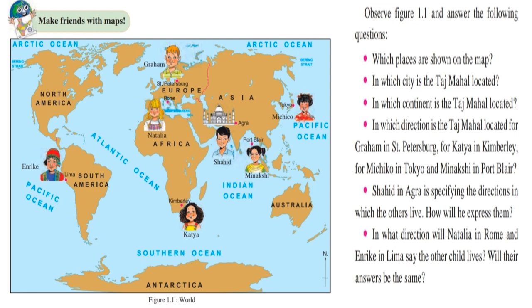From this, we understand that the direction of a place is not same for all children. The direction of a place varies from person to person. This shows us that the use of direction alone does not help us to accurately describe the location of a place. That is why it became necessary to find a new system to state the precise location of any place on the earth.